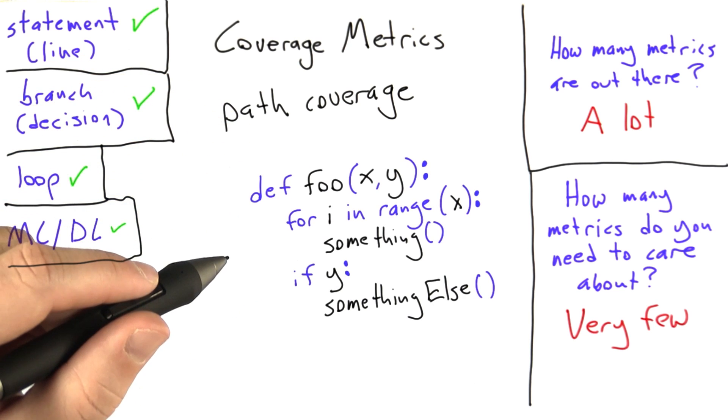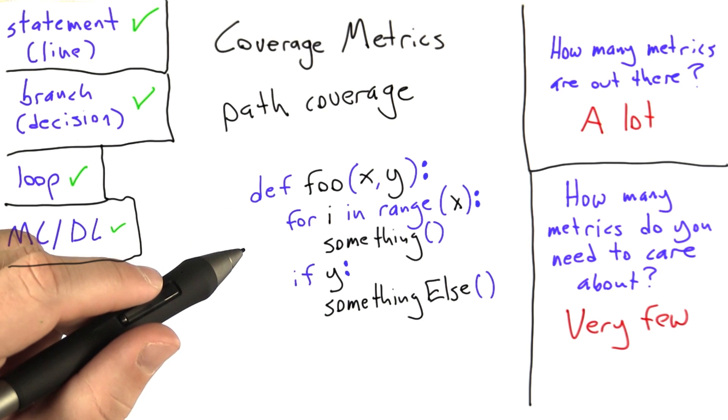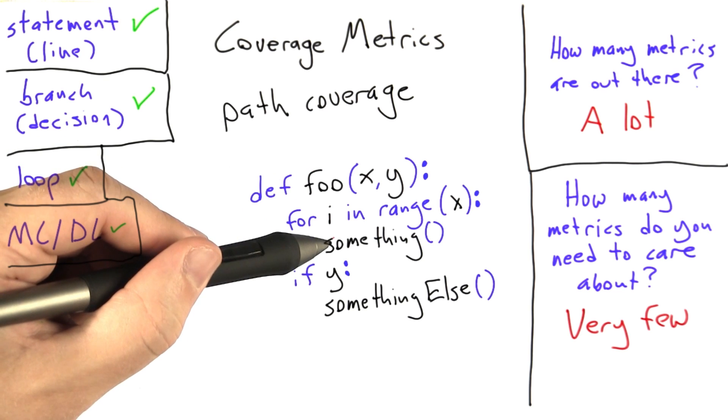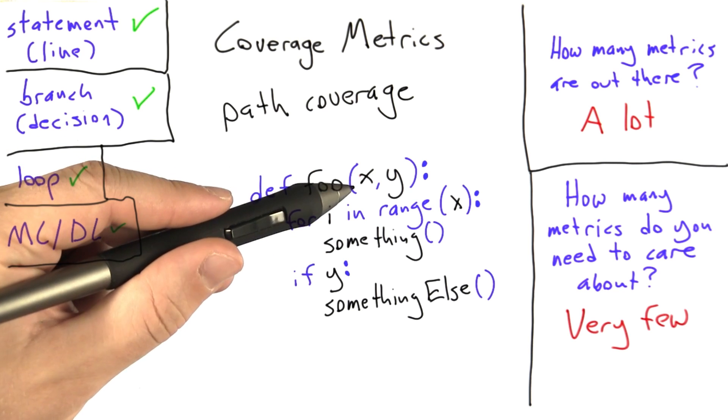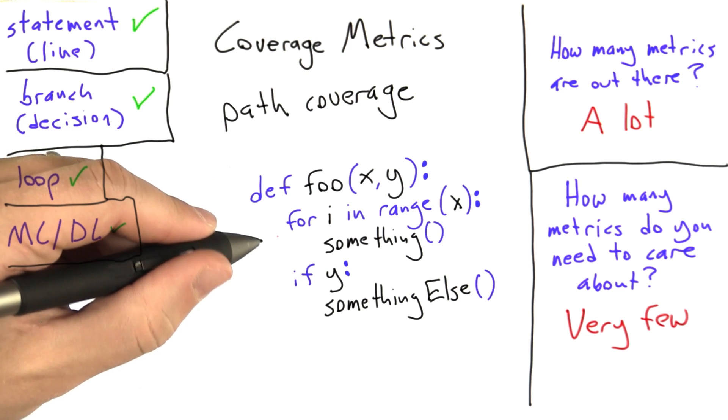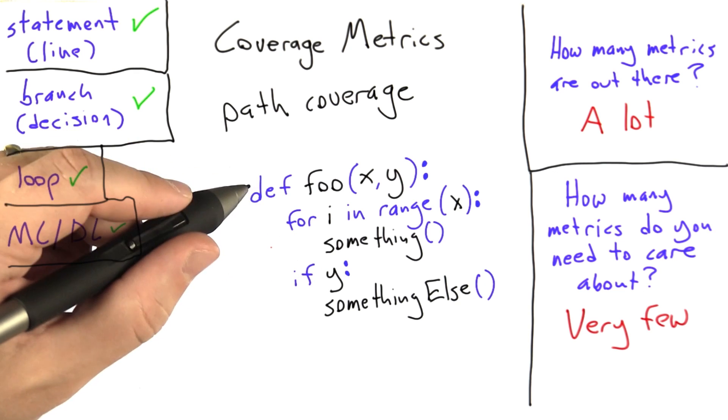So a path through a program is a sequence of decisions made by operators in the program. Let's look at the function foo, which takes two parameters, x and y, and does something x times and does something else once if y is true. We're going to visualize the decisions made by the Python language as it goes through this program.